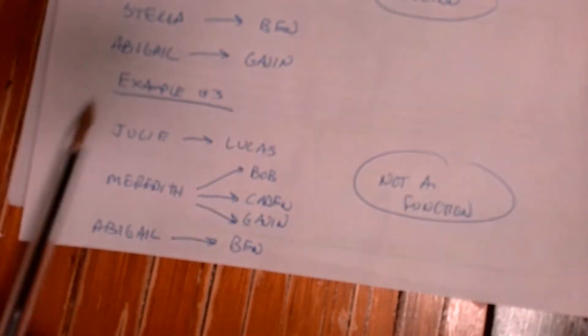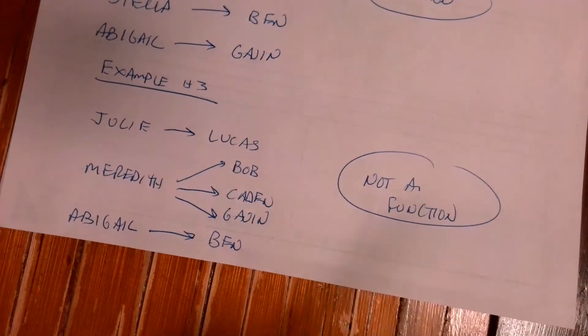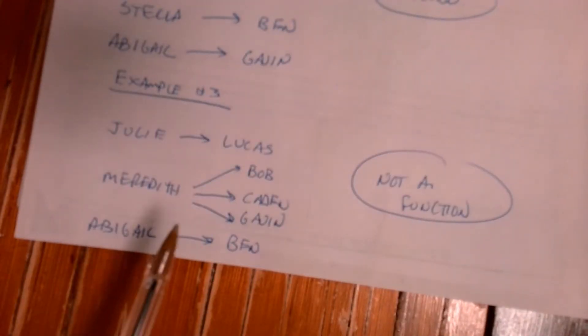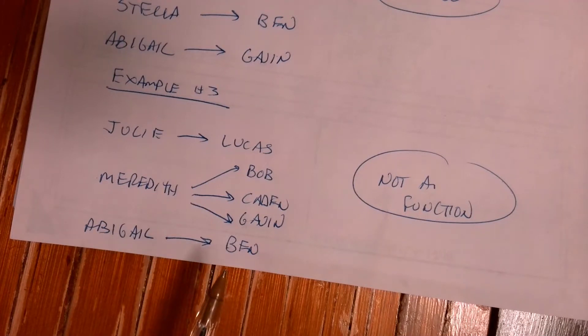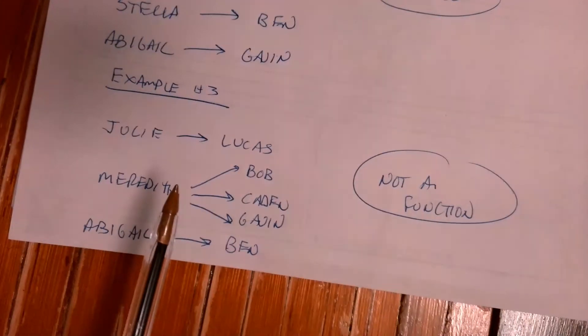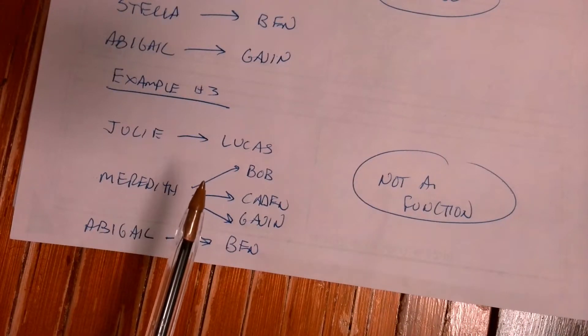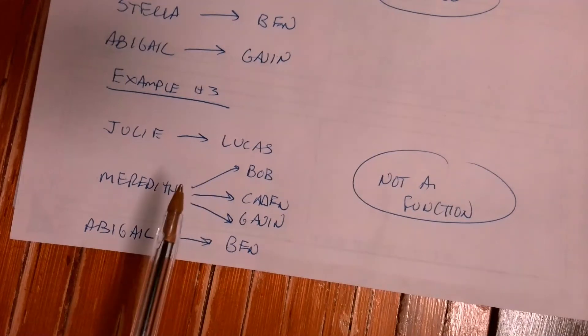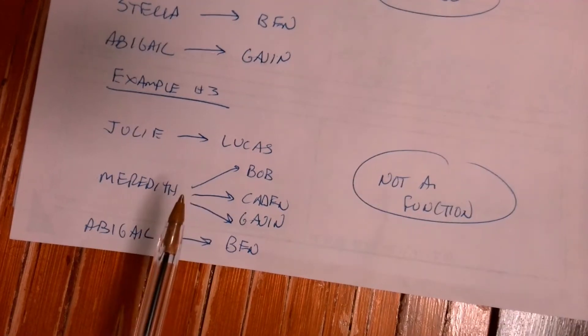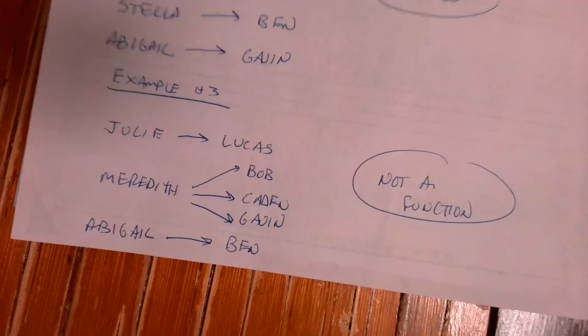Example three is not a function. A function requires that each input — each girl — must like exactly one boy. Julie likes Lucas, that's okay. Abigail likes Ben, so far each girl likes exactly one boy. But Meredith likes three boys — she just can't make up her mind. This is not a function because Meredith goes to three boys, not just one.